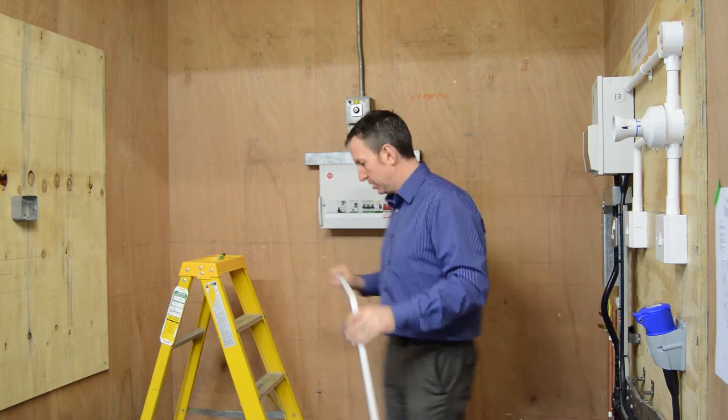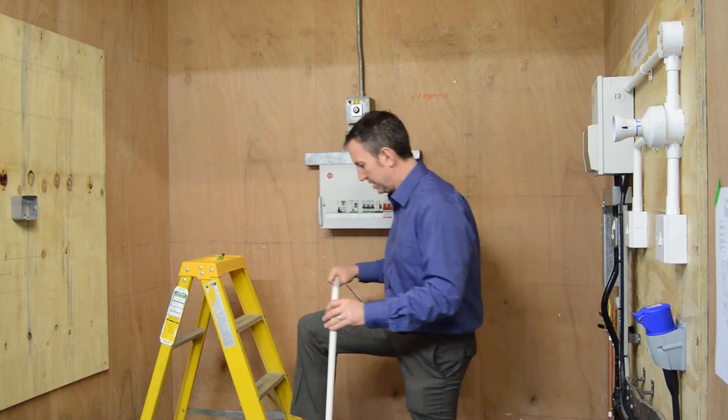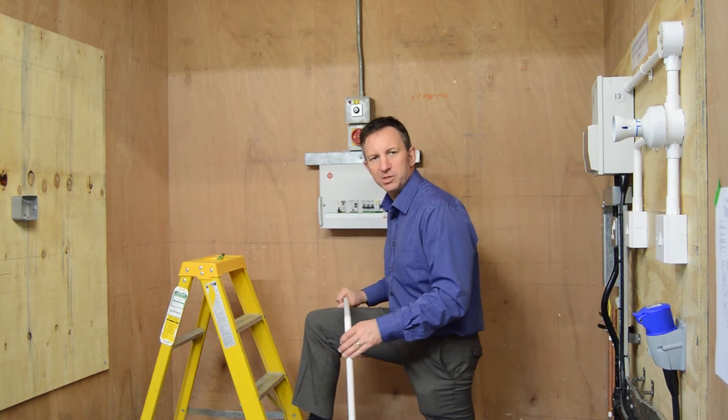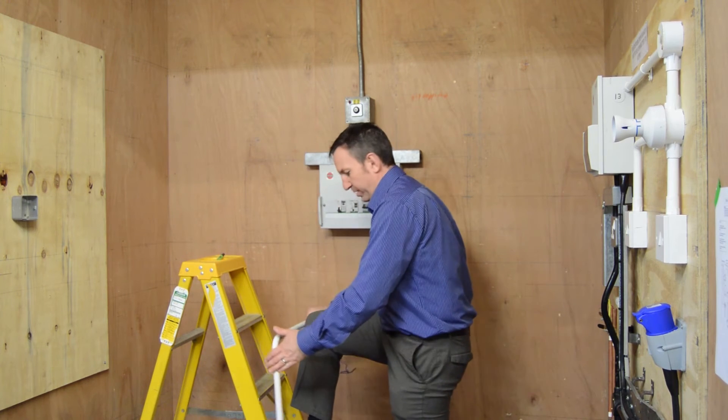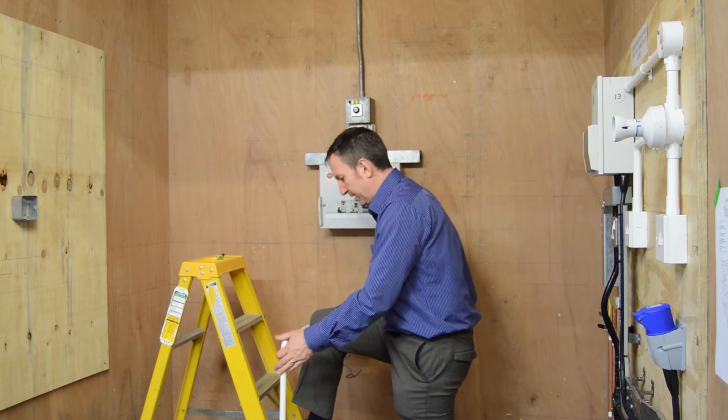Now what we're going to do is put our knee on the electrician steps again. This allows us to pull back nice and square. Make sure you face them exactly straight on.